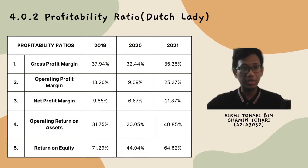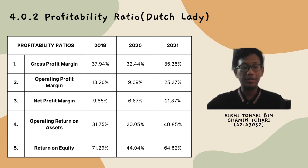Lastly, there is profitability ratio which includes gross profit margin, operating profit margin, net profit margin, operating return on assets, and return on equity.